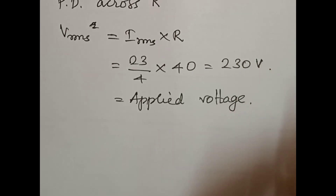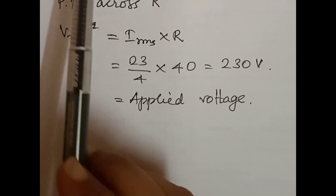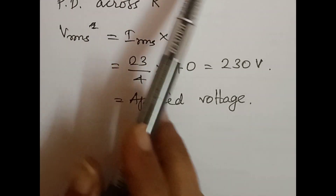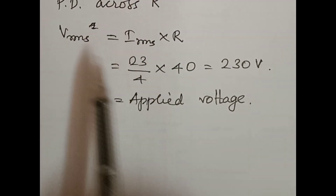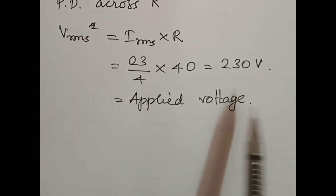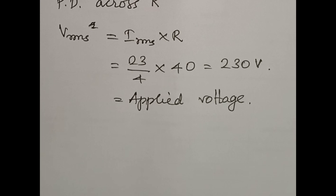This is the applied RMS voltage. The resonance condition shows that when the RMS voltage is applied, the potential difference across R equals the applied RMS voltage of 230 volts.